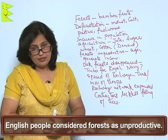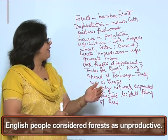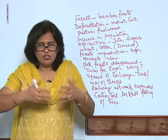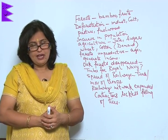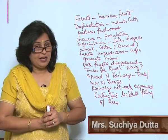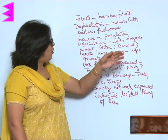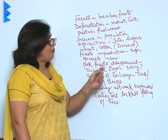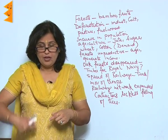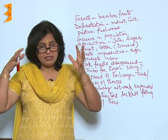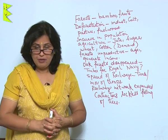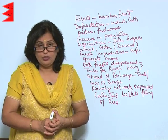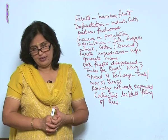The English also considered the forest as unproductive. They thought the forests were just growing in wilderness and not generating any kind of income. So they started agriculture there because it was a double benefit — production was meeting the requirements of people in Britain while also generating income for the rulers of India.